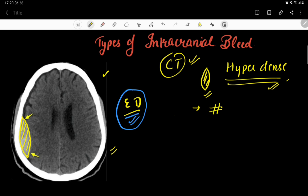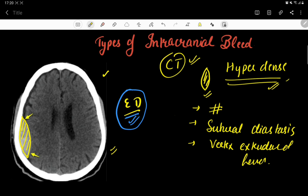Along with the lens-shaped biconvex opacity, midline shift may also be seen in some cases, as well as subfalcine herniation or uncal herniation, due to the pressure effect of the hematoma.